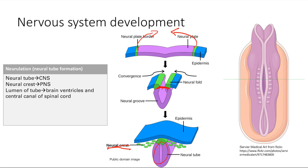The lumen of this tube — the hole — becomes your brain's ventricles and the central canal of the spinal cord. Note that this cross section starts right in the midline of the neural plate and zips up two ways: anteriorly and posteriorly. When the anterior side zips up it becomes the brain, and when the posterior side zips up it becomes the spinal cord.